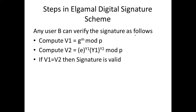Agent Y verifies the signature by computing V1 = G^M mod P using G and P from the public key and M as the hash of the received message. Then V2 = E^Y1 × Y1^Y2 mod P, using E and P from the public key and Y1, Y2 from the signature. If V1 equals V2, the signature is valid, confirming the message is from an authenticated source with integrity intact. The private key creates the signature; the public key validates it.